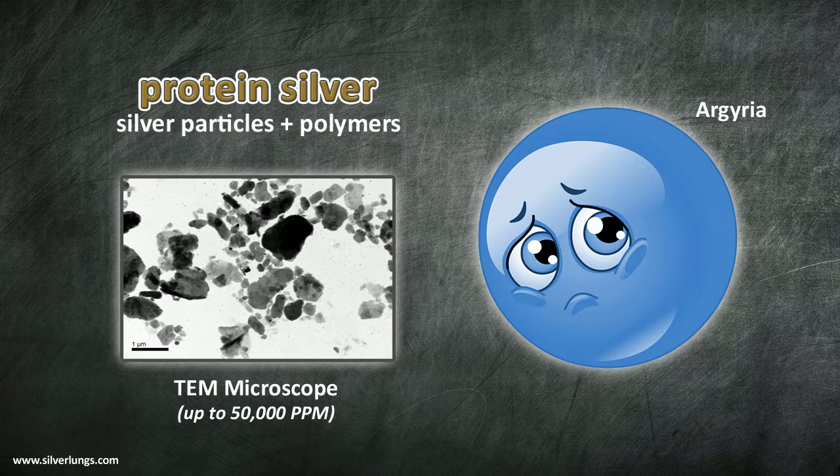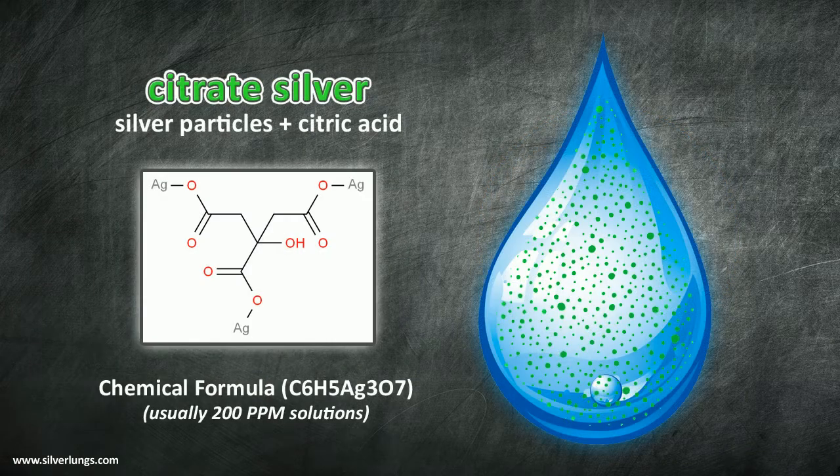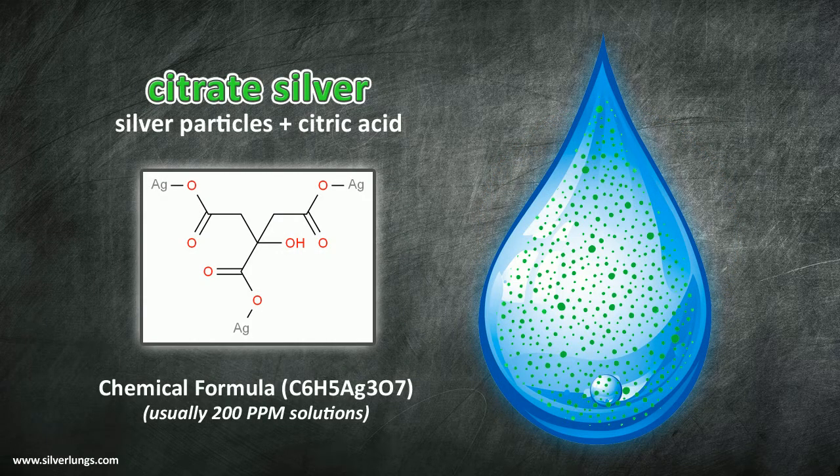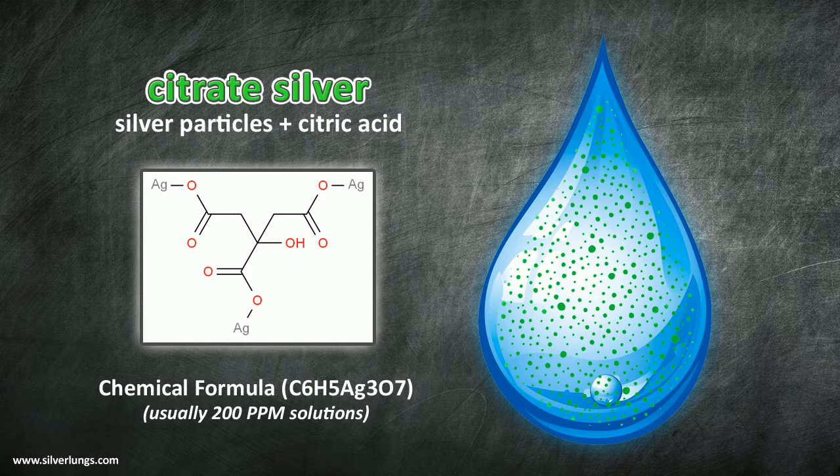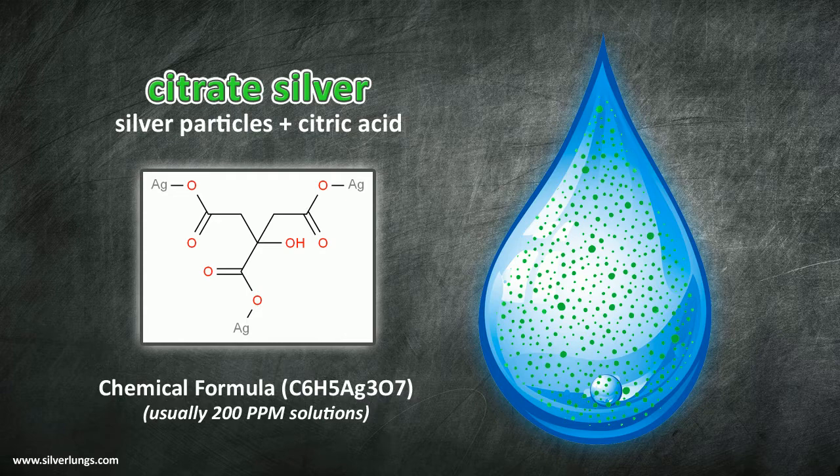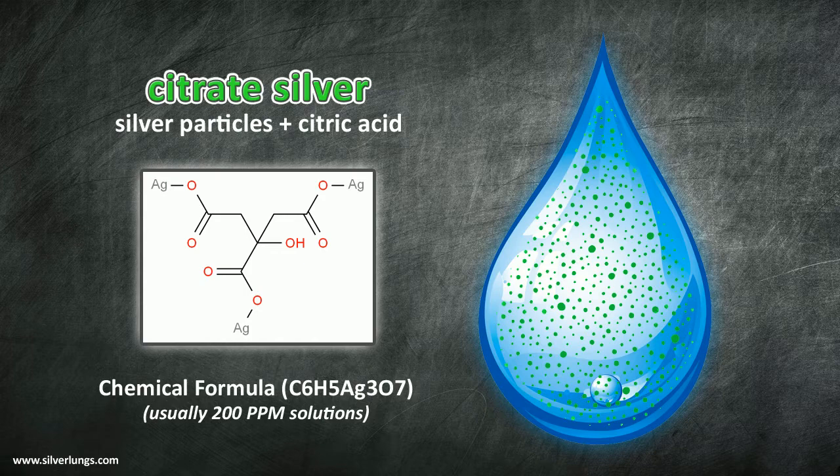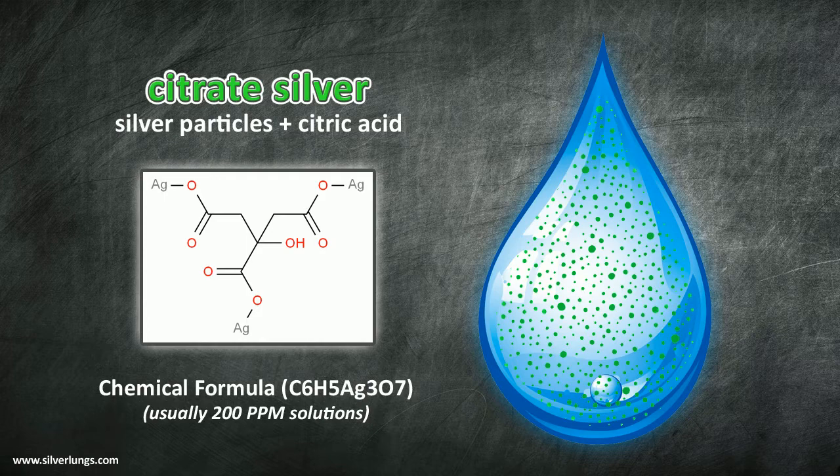Next on the list of silver solution types is citrate silver. Citric acid is a hidden ingredient in some silver solutions where the citric acid allows for greater concentrations upward of 200 ppm. While I don't consider 200 ppm terribly high or unsafe when used responsibly, I do need to mention that any time silver is combined chemically with another substance it can be assimilated differently by the body and can cause unpredictable results.